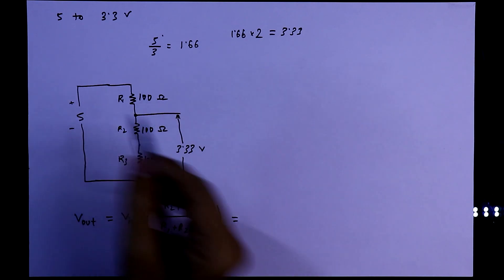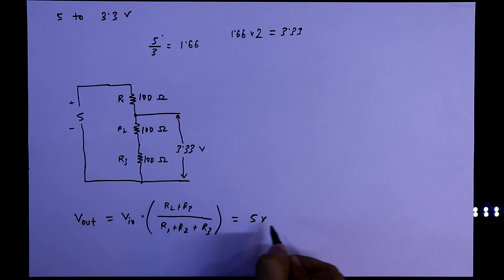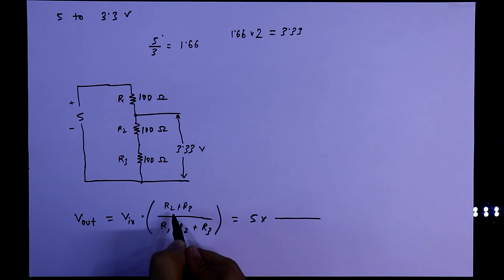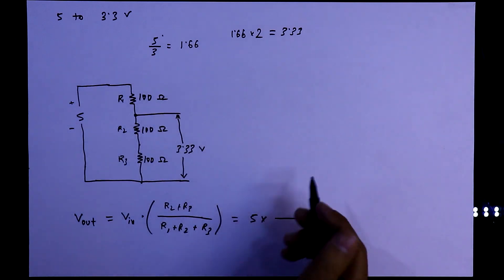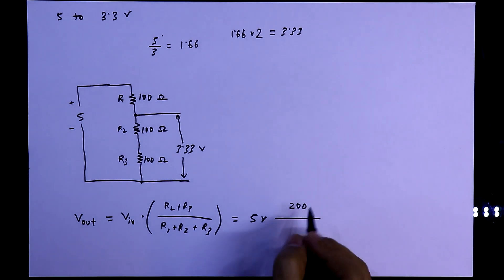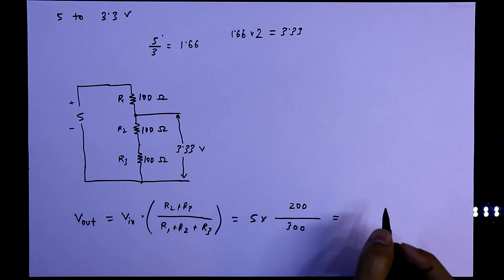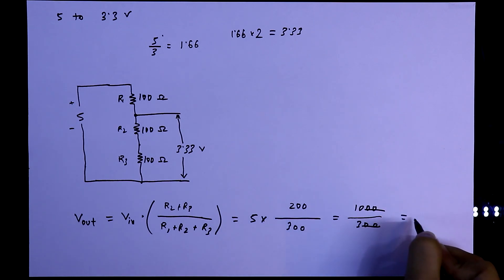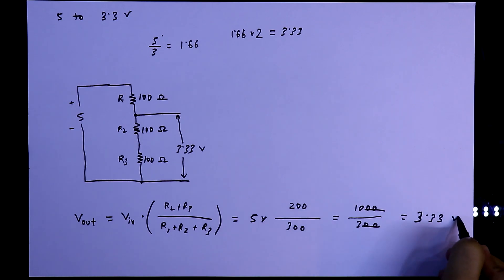So Vin is 5 multiplied by R2 plus R3, it is 100 plus 100, it is 200, and divided by 300. So it is 1000 by 300, 10 by 3. And we know that it is 3.33. So this is how I am doing this voltage divider equation.